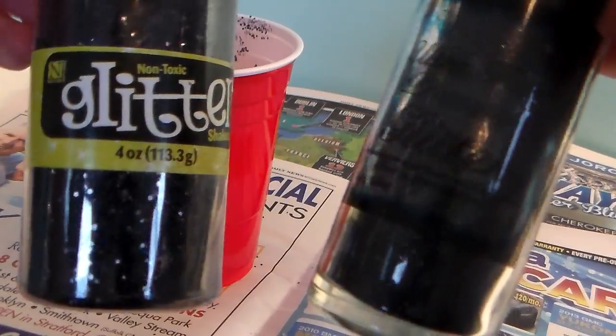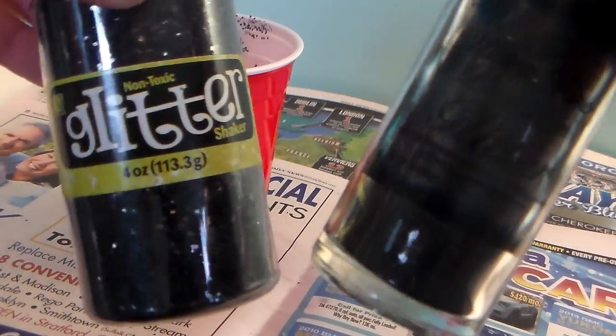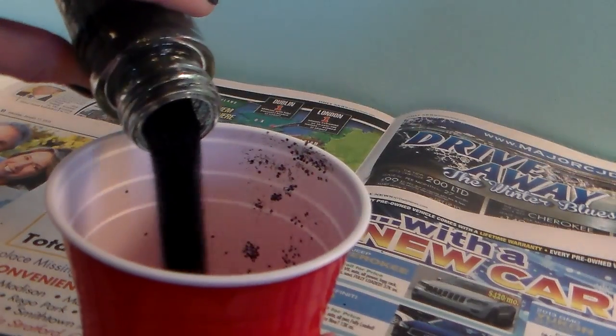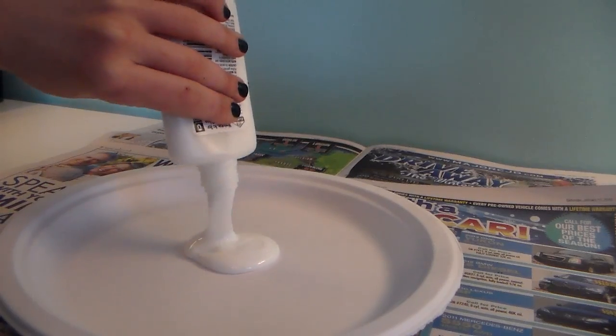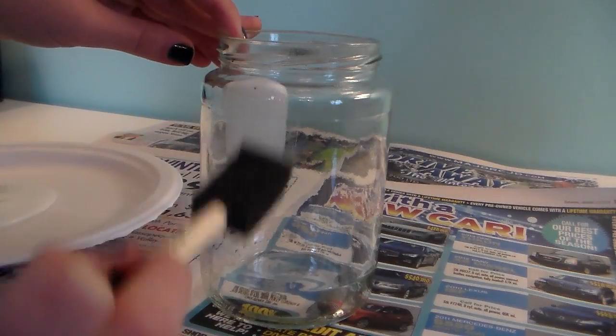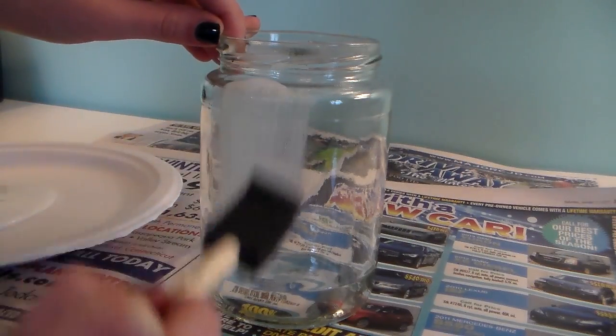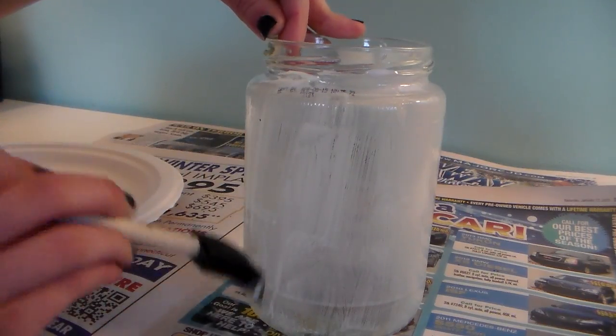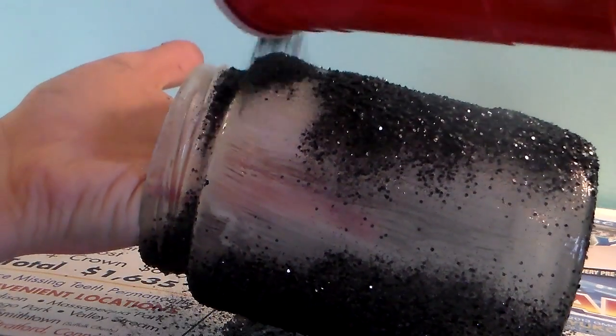For this one you'll need glitter. I'm using two different kinds, one bigger size and one fine size so it can fit into all the little cracks. Mix that up into a cup, then take Elmer's glue and paint your whole jar with it. This is an old pickle jar, so any jar will work. Pour all the glitter onto it.